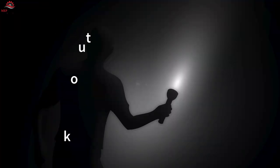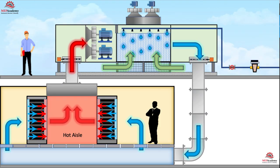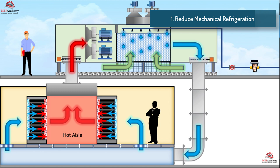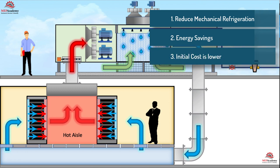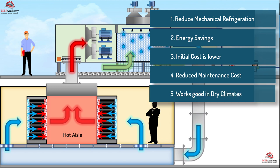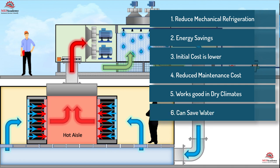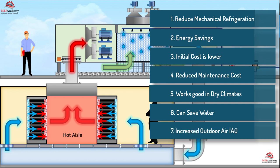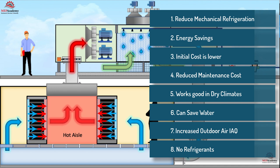The problem is increased on high ambient temperature days. Indirect evaporative coolers work best in low-humidity areas with designed wet-bulb temperatures below 70 degrees Fahrenheit, allowing for energy savings over mechanical refrigeration cooling. Benefits of evaporative cooling: one, it can reduce or eliminate mechanical refrigeration or chiller usage; two, overall energy savings; three, initial cost is less than refrigerated air conditioning; four, reduced maintenance costs with less skilled maintenance personnel; five, works well in dry climates; six, can save water when compared to a water-cooled chiller plant; seven, the ability to increase the amount of outdoor air for improved indoor air quality; eight, environmentally friendly as there are no refrigerants, CFCs, or HCFCs.